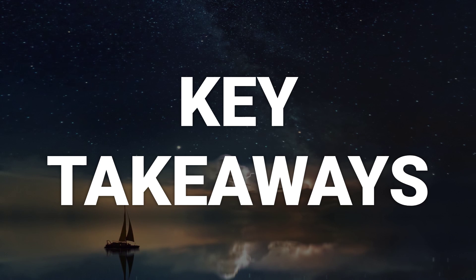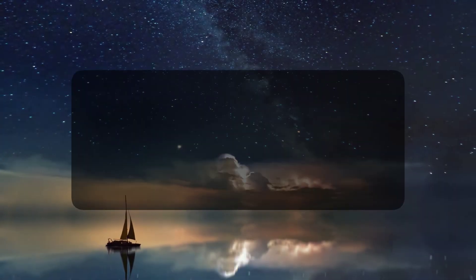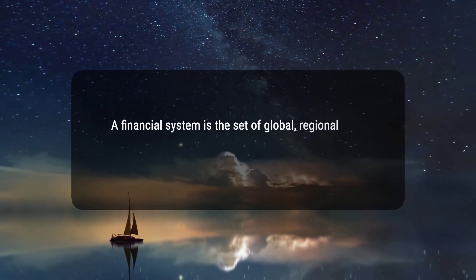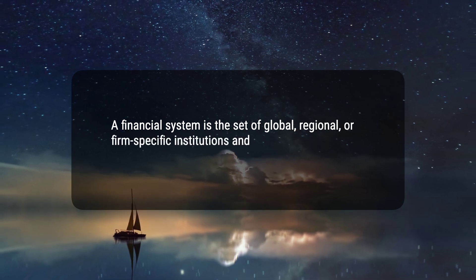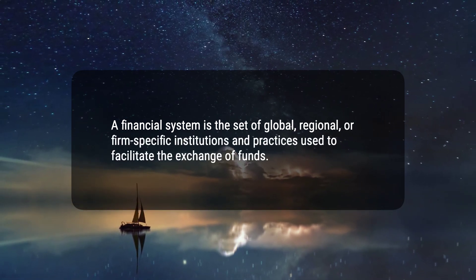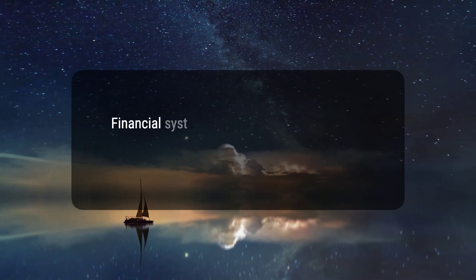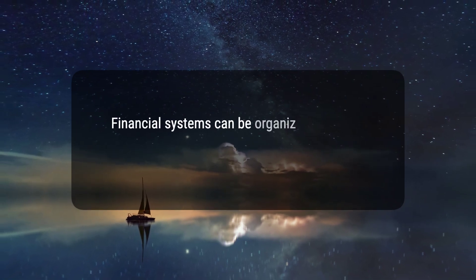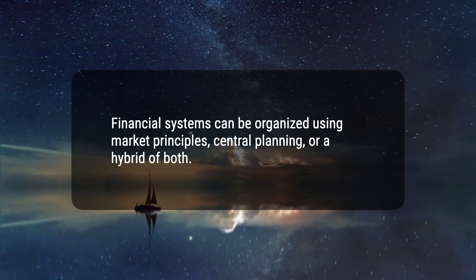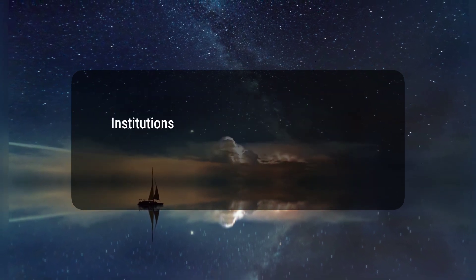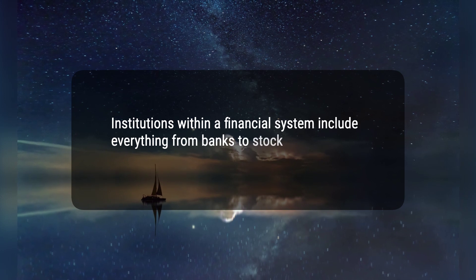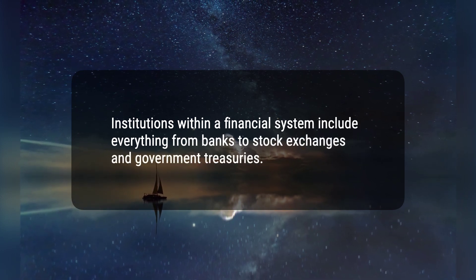Here are three key takeaways. 1. A financial system is the set of global, regional, or firm-specific institutions and practices used to facilitate the exchange of funds. 2. Financial systems can be organized using market principles, central planning, or a hybrid of both. 3. Institutions within a financial system include everything from banks to stock exchanges and government treasuries.